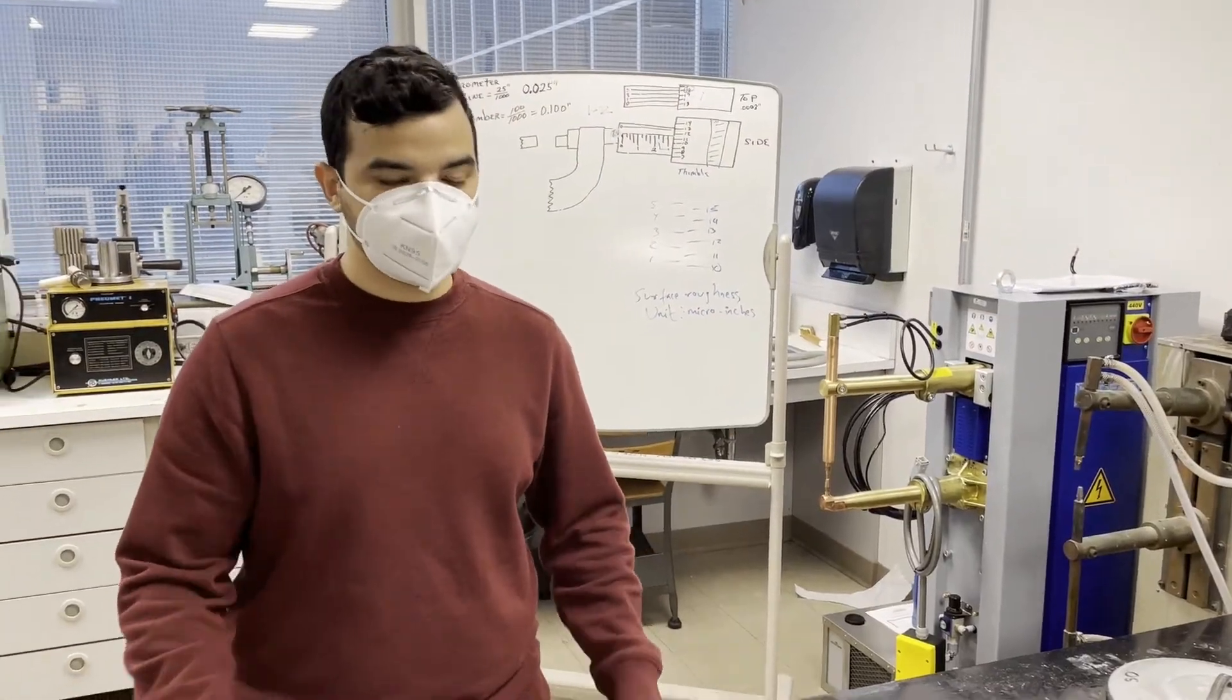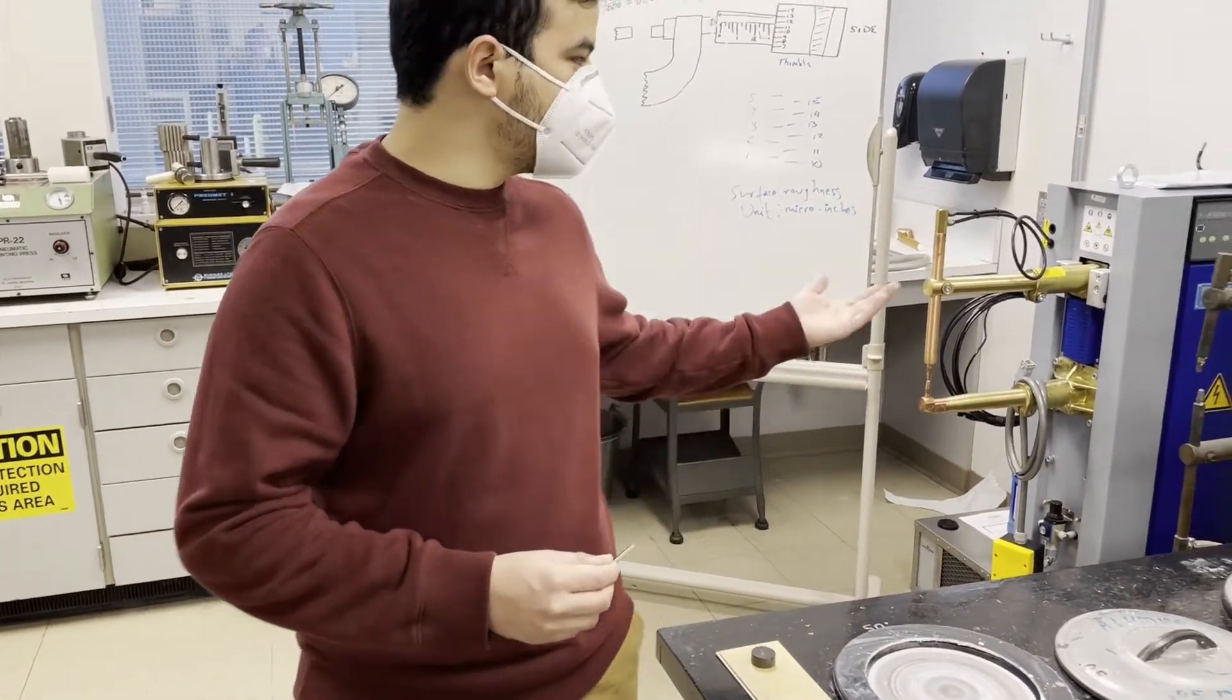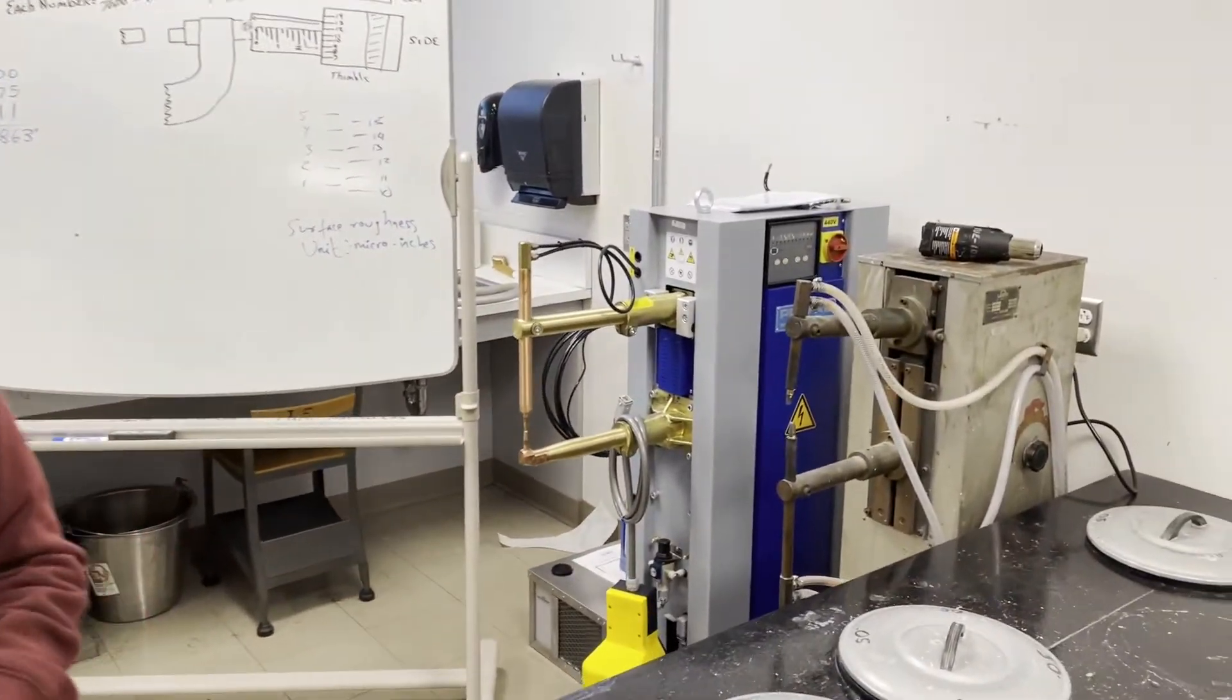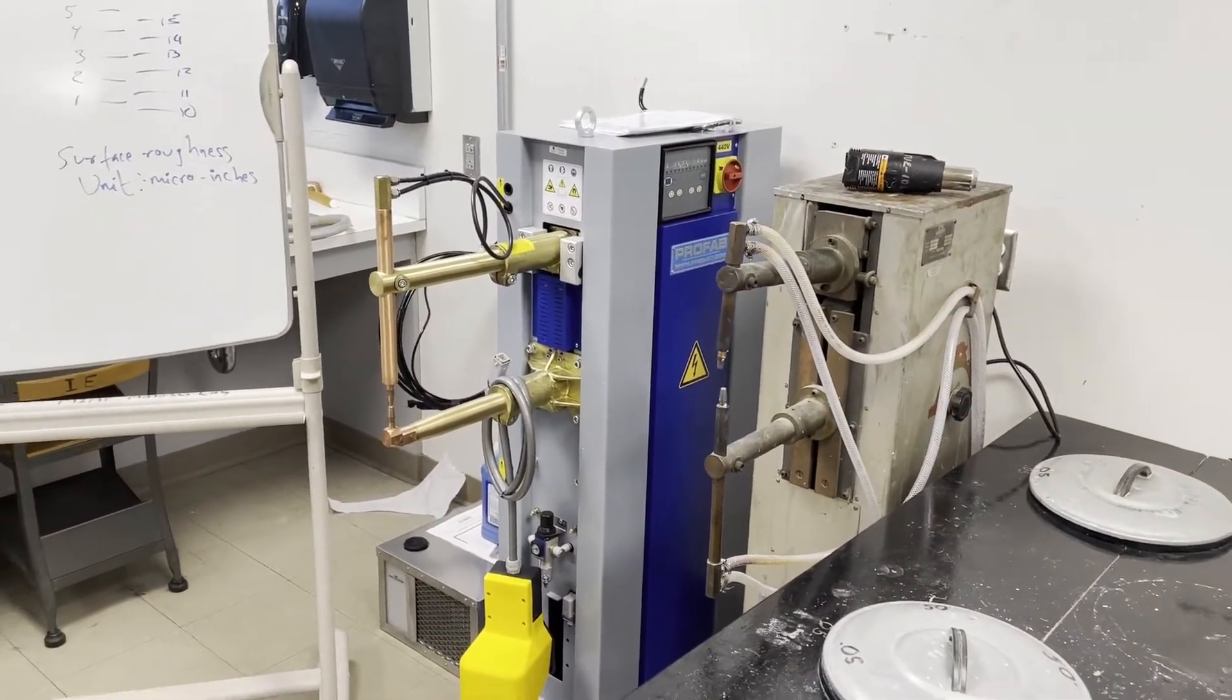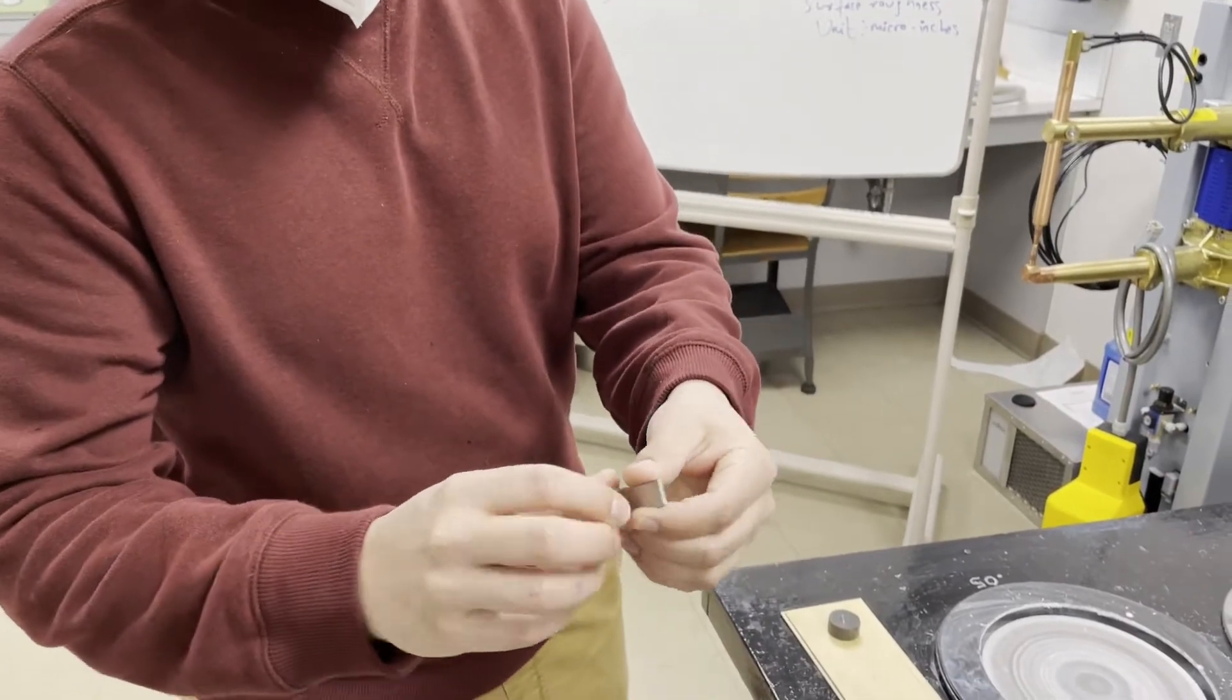One of our common experiments here in the material science lab is resistance spot welding. So here we have our spot welder which we're going to be using to weld these two coupons together.